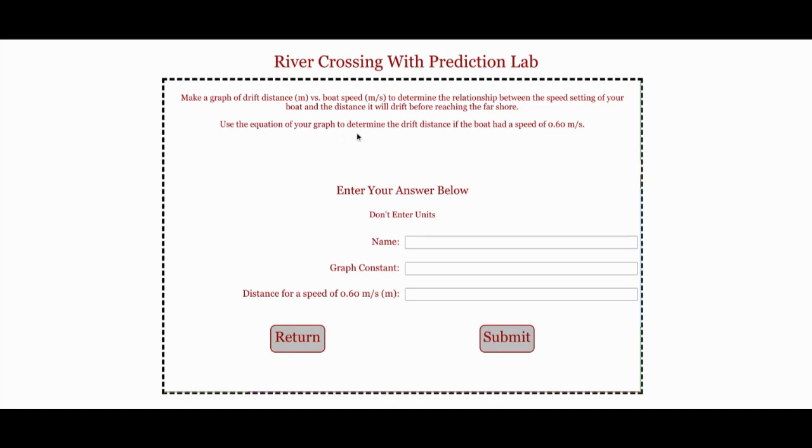Using the graph constant and the equation of the line, you can figure out what the drift would be if the boat speed were 0.6. So it wants you to calculate a drift for a speed you can't set in the sim.